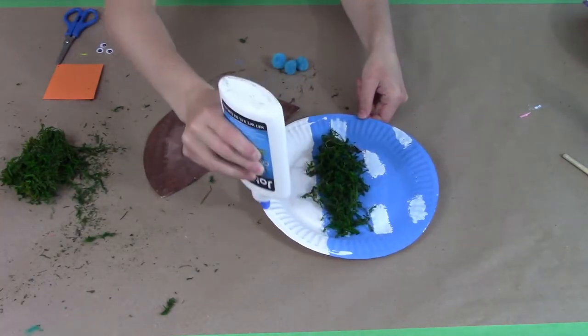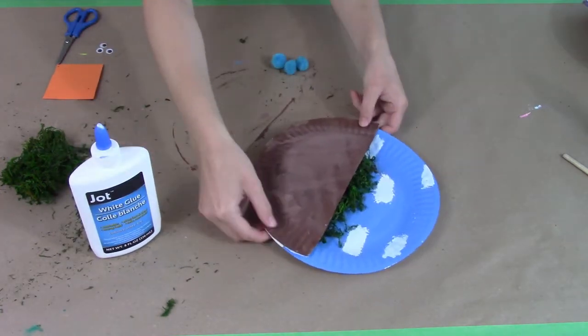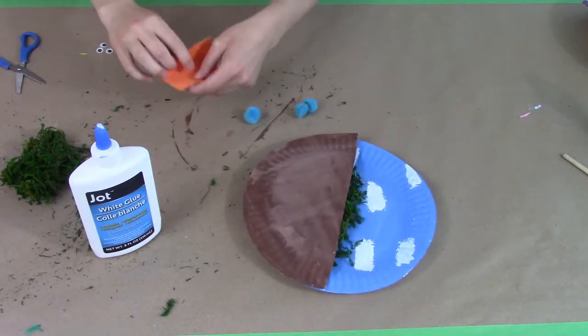Next you're going to grab your glue again and then grabbing your half plate you're just going to glue it onto the bottom of the other plate.